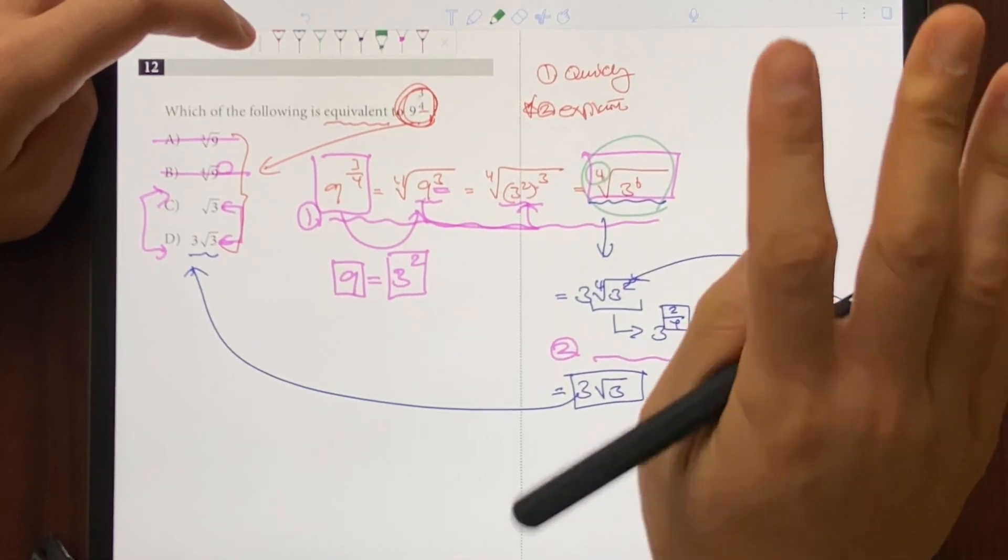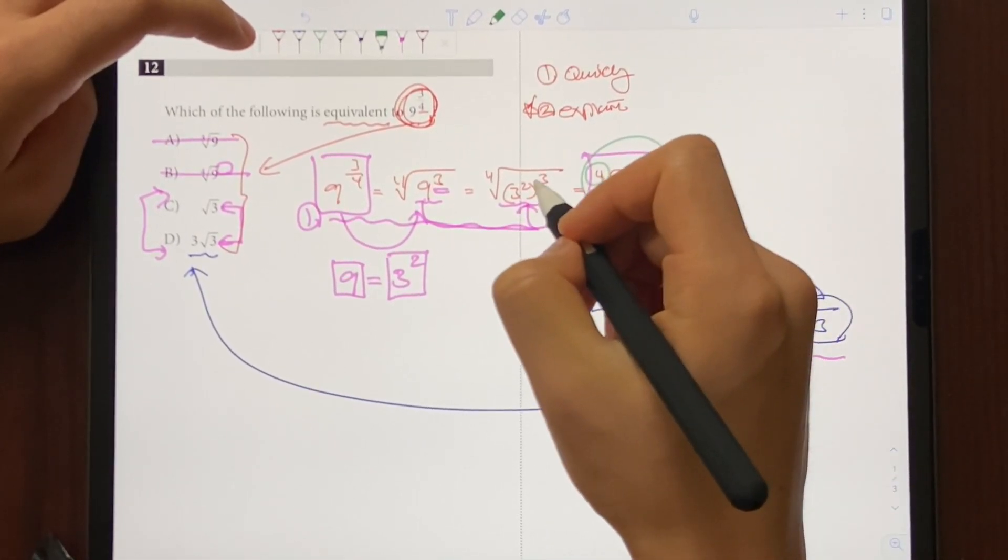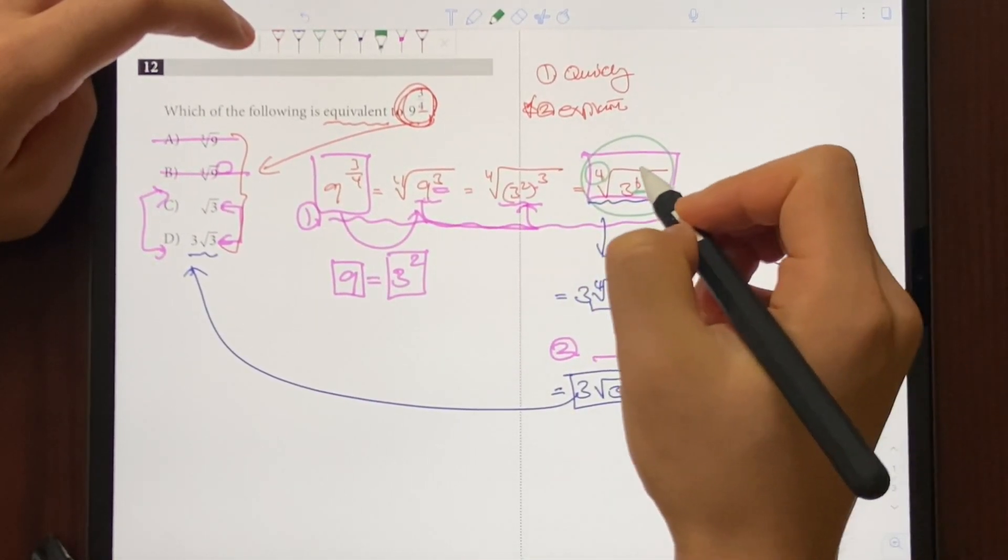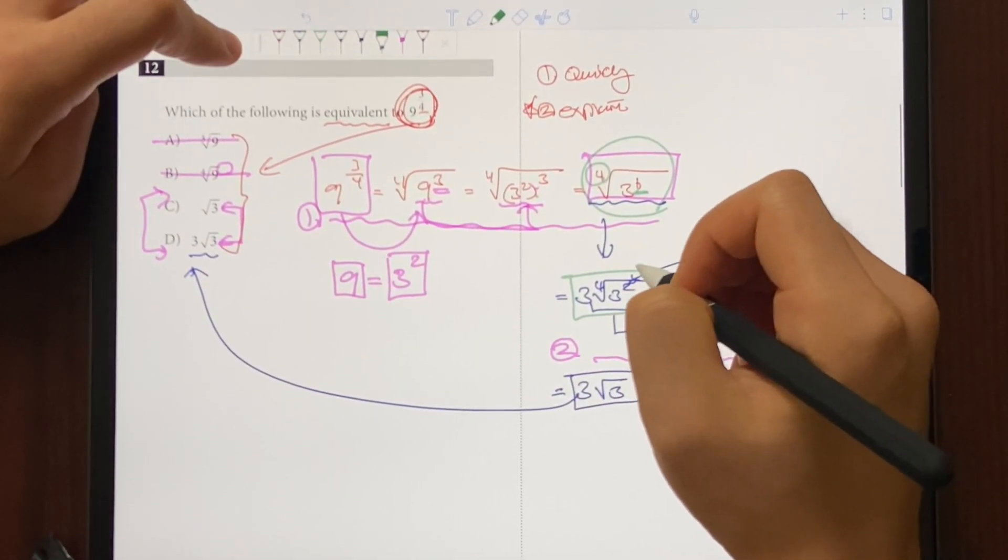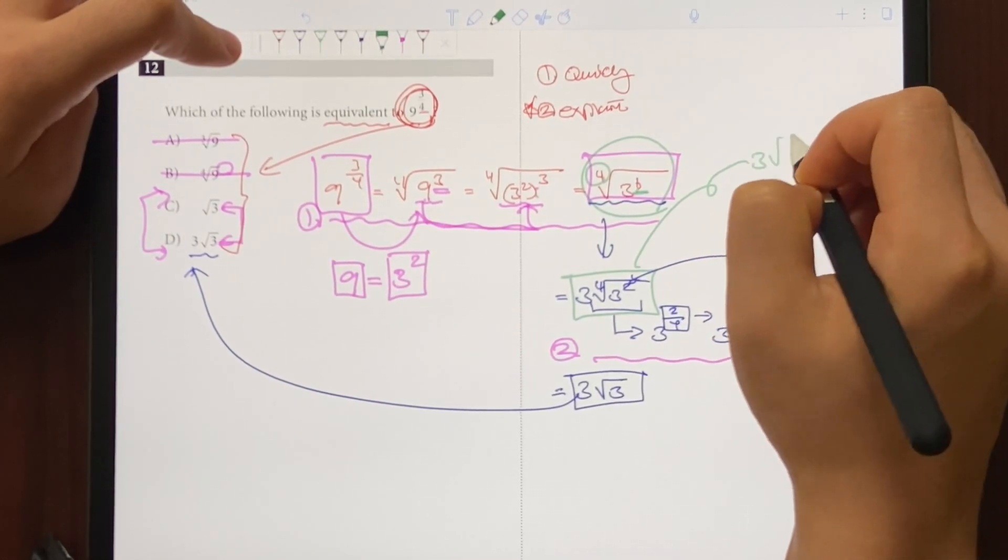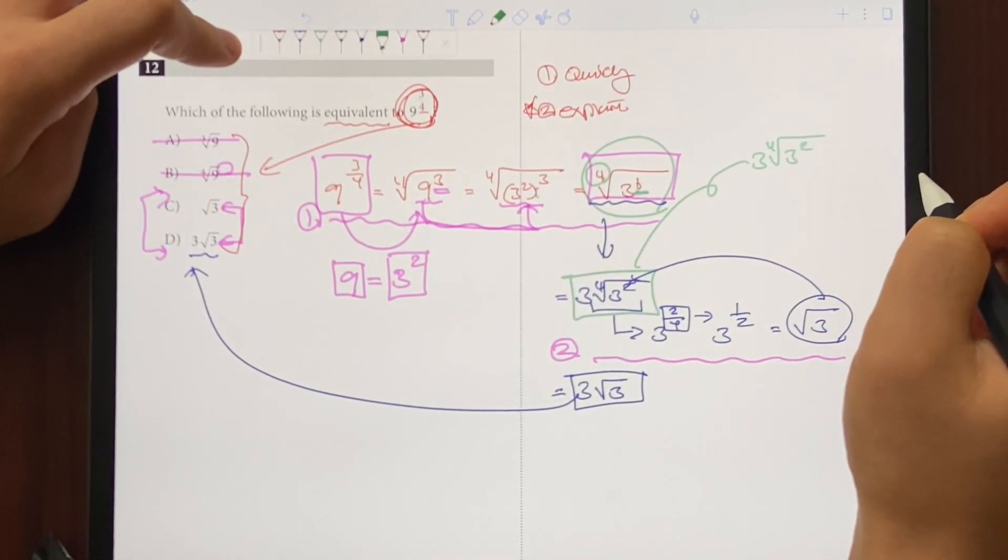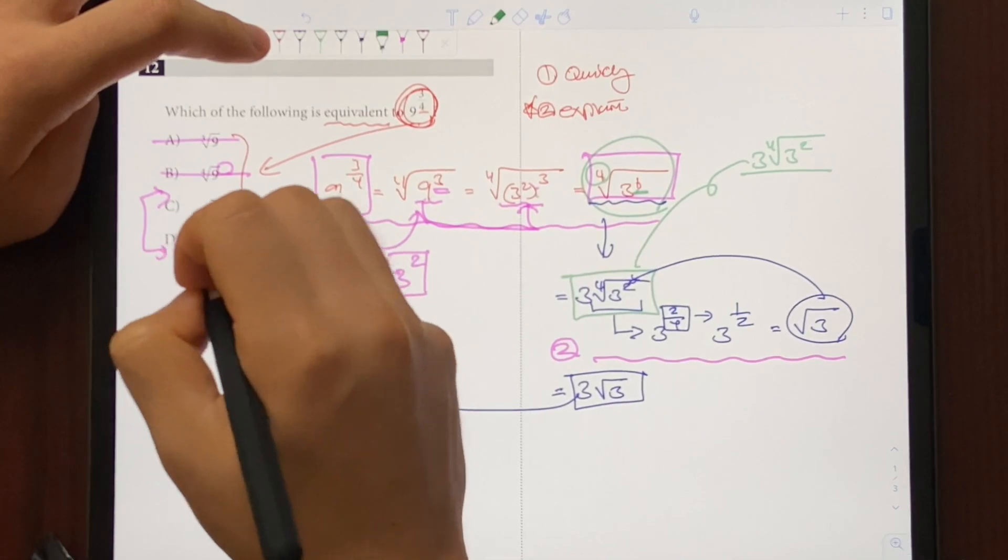So what we're going to do is we're going to simplify this radical a little bit. It's a quad root, which means we need four of the same numbers on the inside to pull them out. And we have currently six of them, which means we can pull one set out, which simplifies down to 3 quad root 3 to the second power. It's kind of hard to see, so let me rewrite it. It's going to be 3 quad root 3 to the second power.